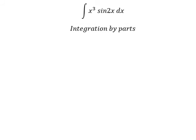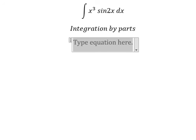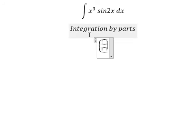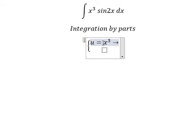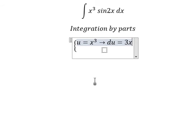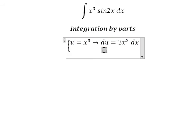So I need to put u equals x to the power of 3. After that, we do the first derivative for both sides. And we have 3x² dx.